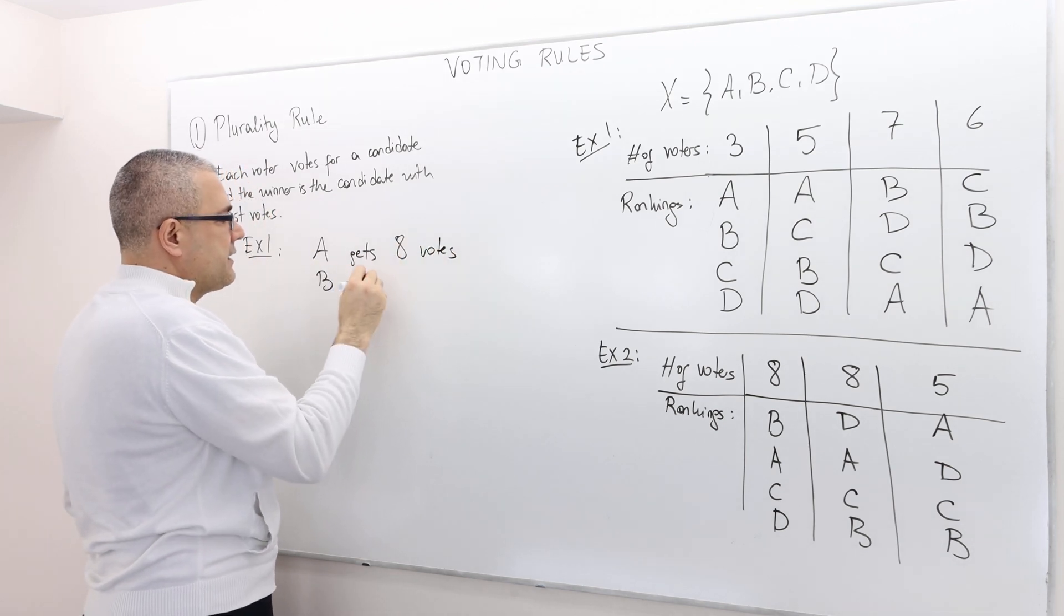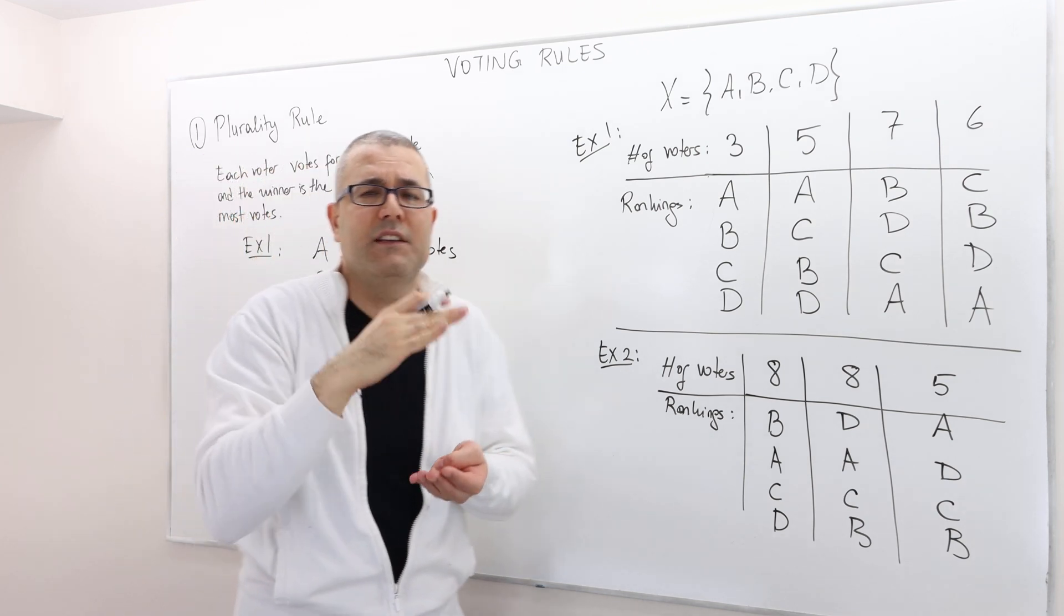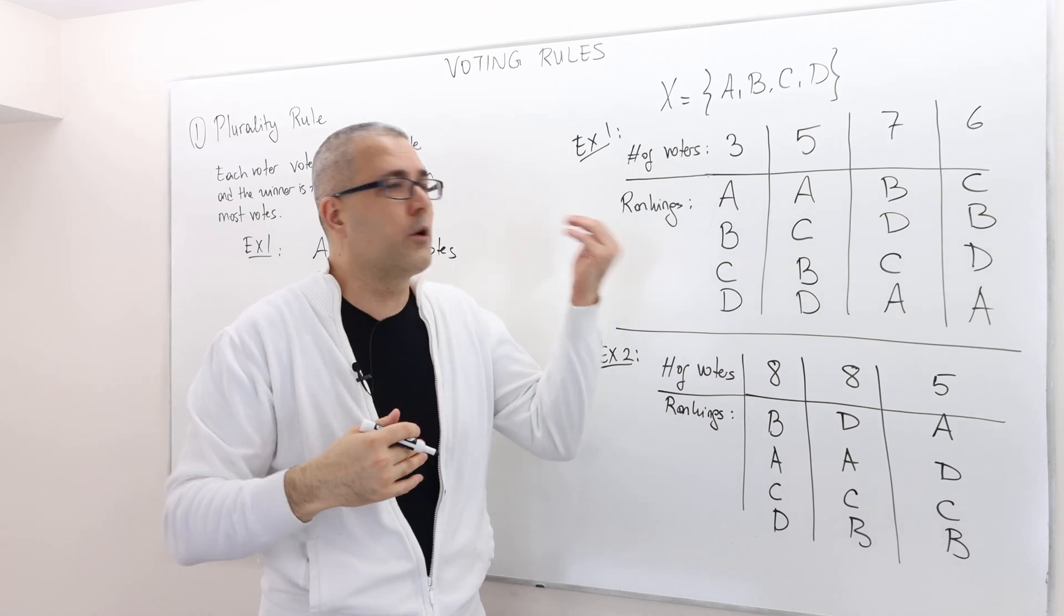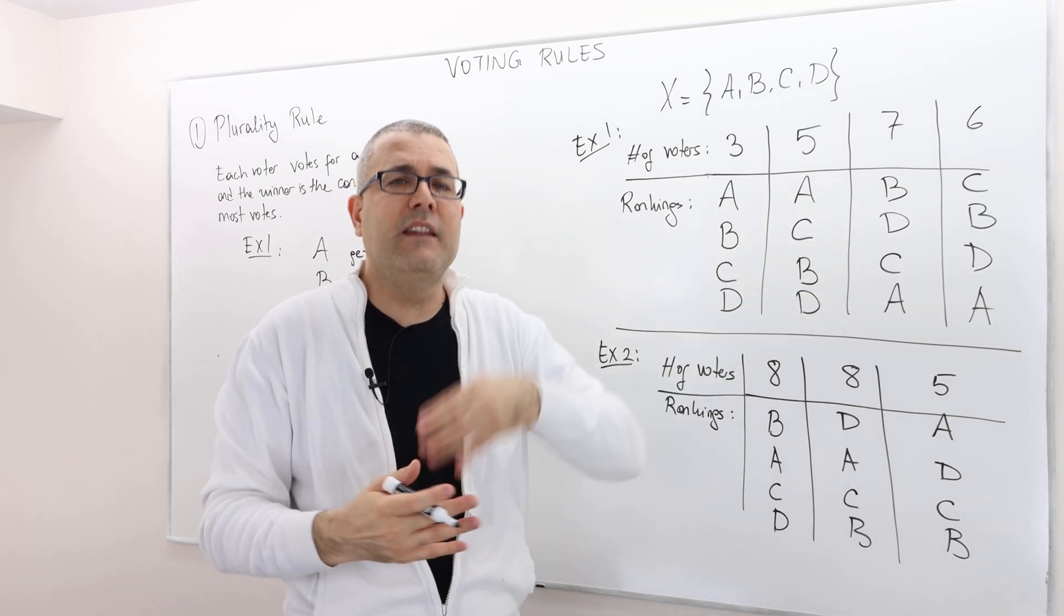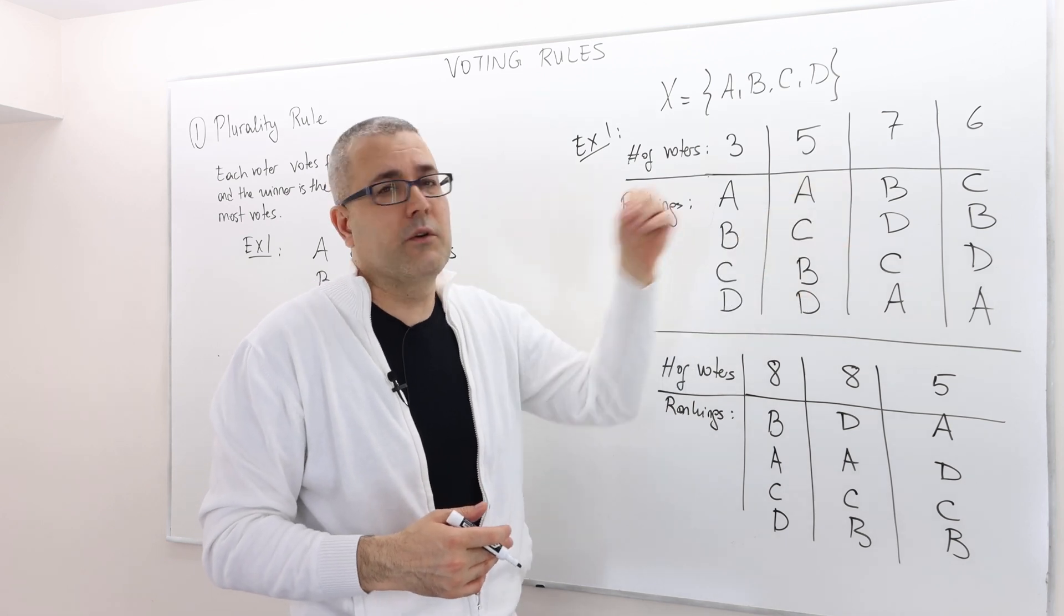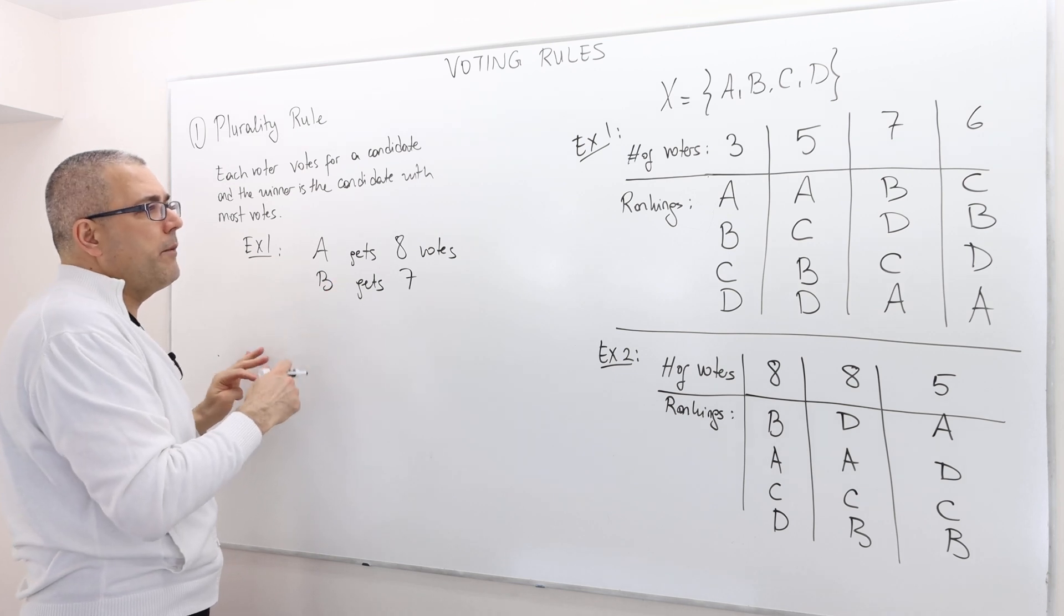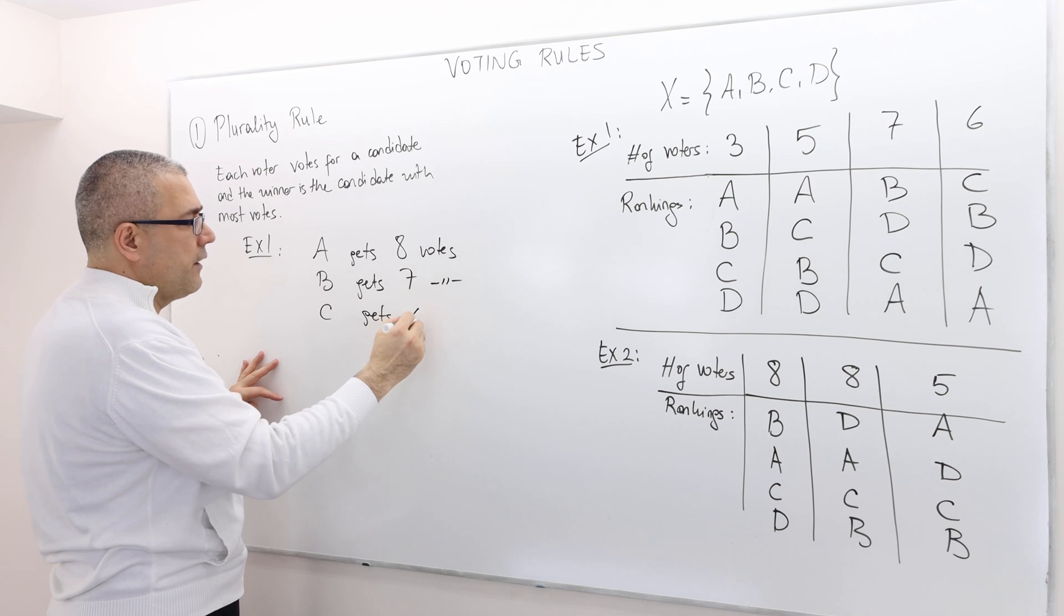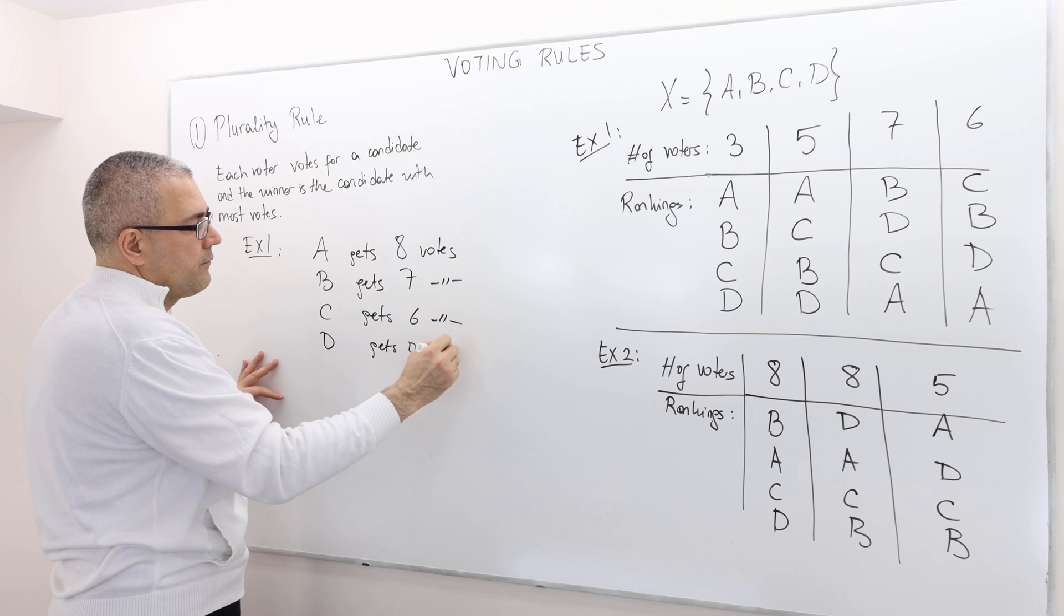Well, what about B? B gets only seven votes because only seven people rank this candidate as their top choice, and so they would vote for B if they truly honest to this ranking. And then if they vote not strategically, they should have been voting for candidate B. And so B gets seven votes then. What about C? C gets six votes, and then D gets zero votes.